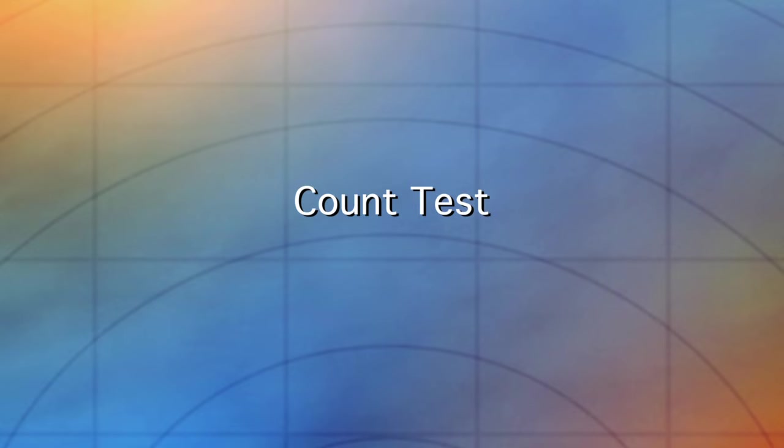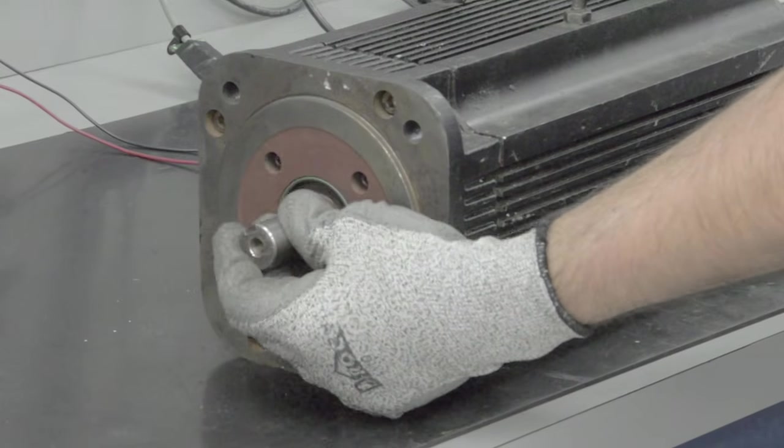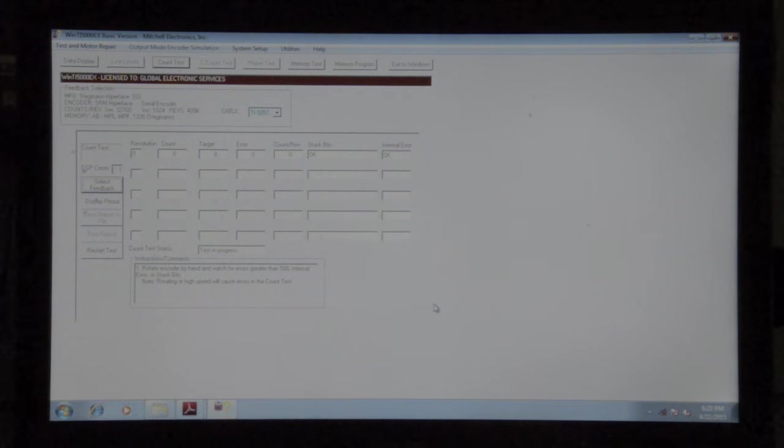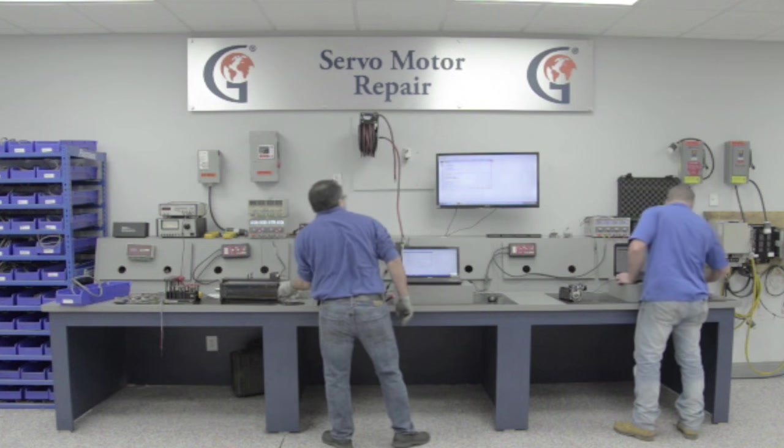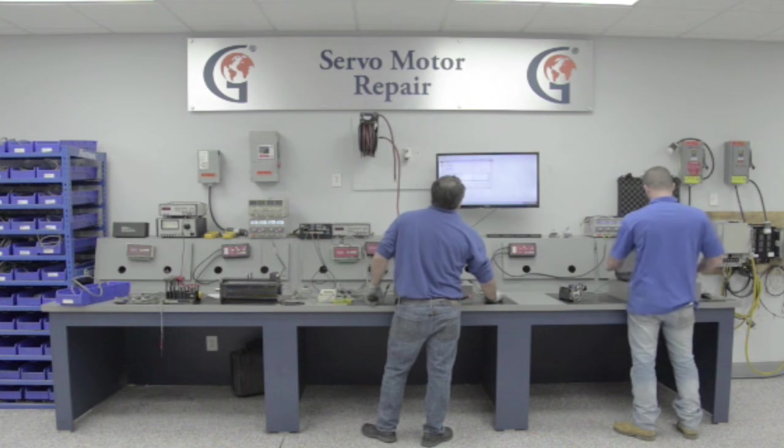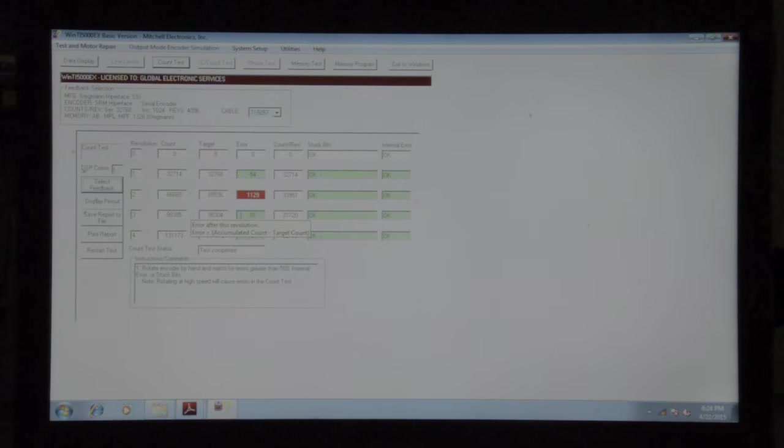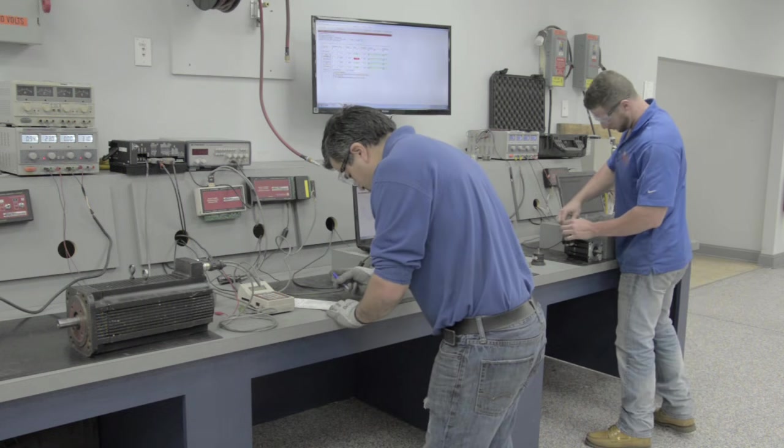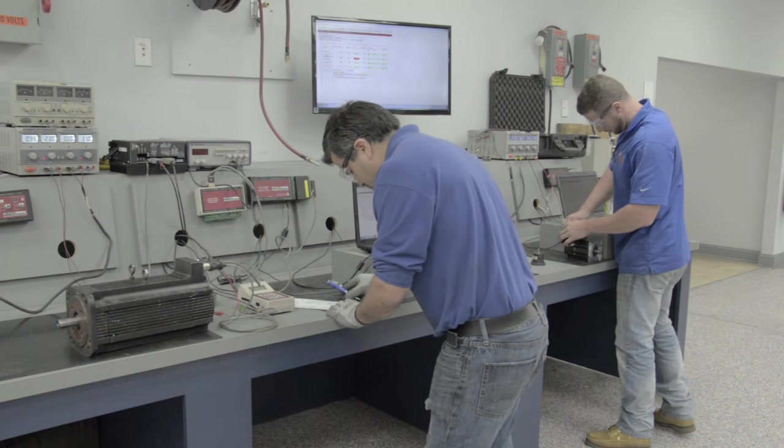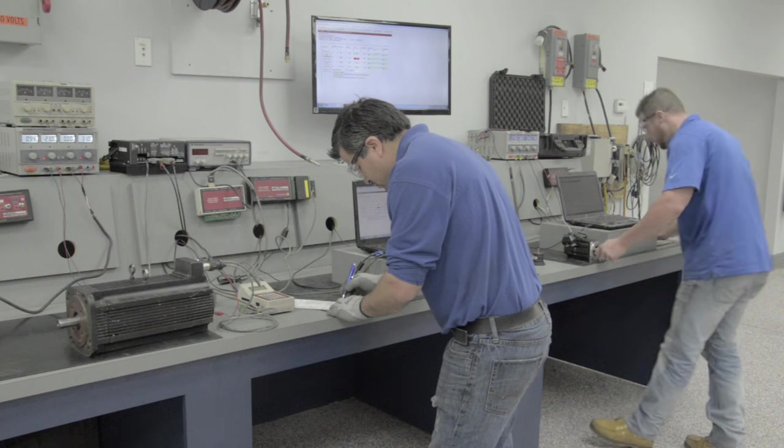Now we can proceed to the count test. To do this, we manually turn the shaft. First count, good. Second count, error. Third count, good. Fourth count, good. As you can see, the encoder has failed the count test in the second revolution. This motor will need to have the encoder repaired. Since we also repair industrial electronics here in the shop just down the hall, we can get the encoder repaired right now, so it won't delay us. We can now finish up our evaluation, quote this motor, and send a sales order over to the customer for approval to move forward with this repair.